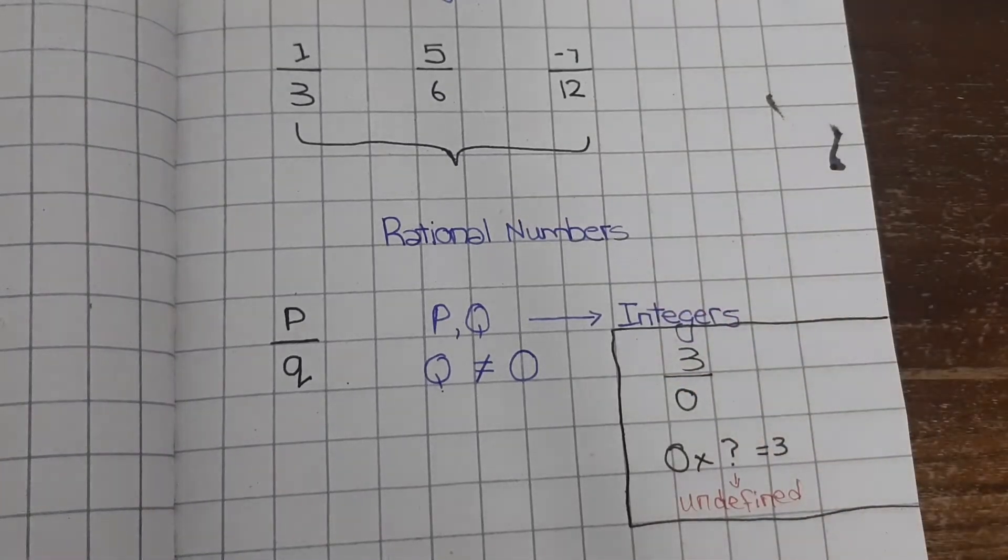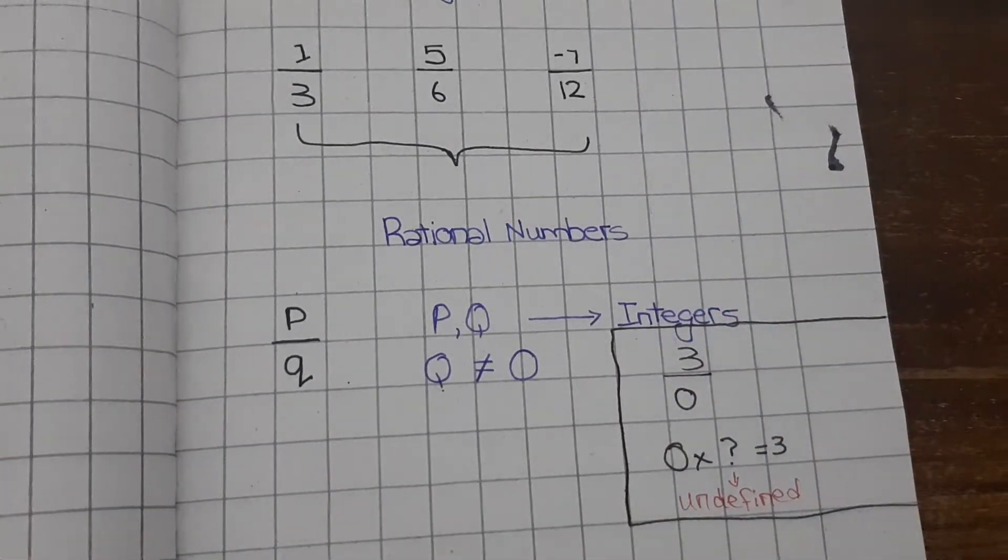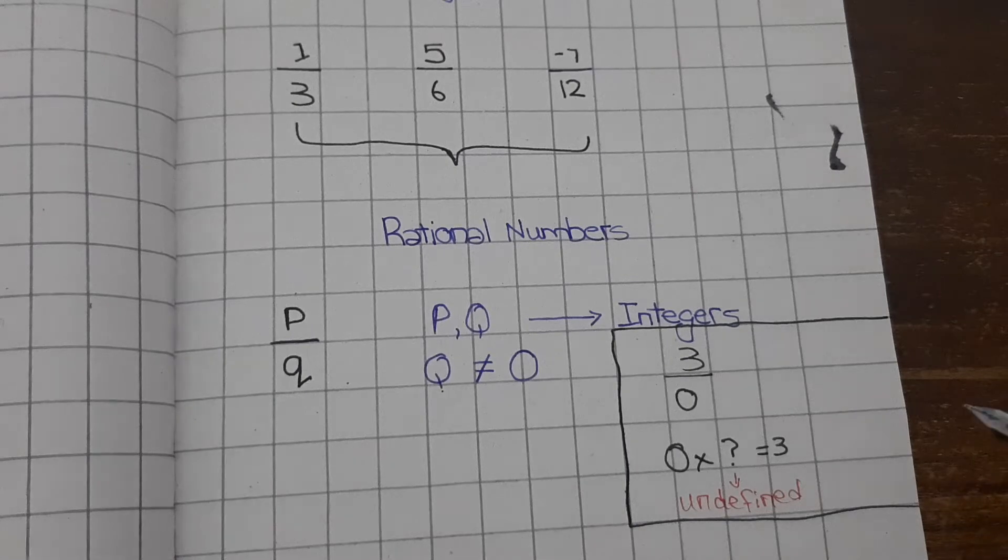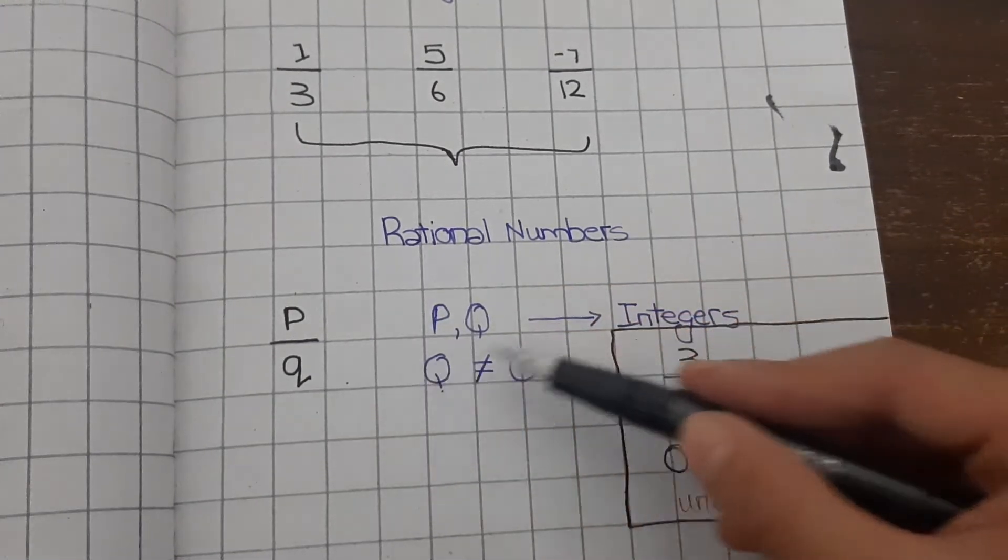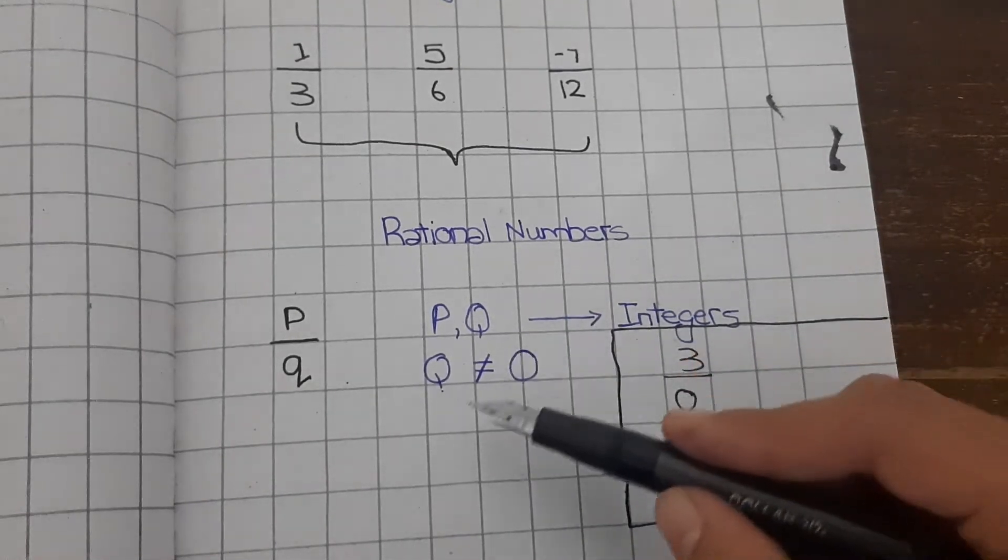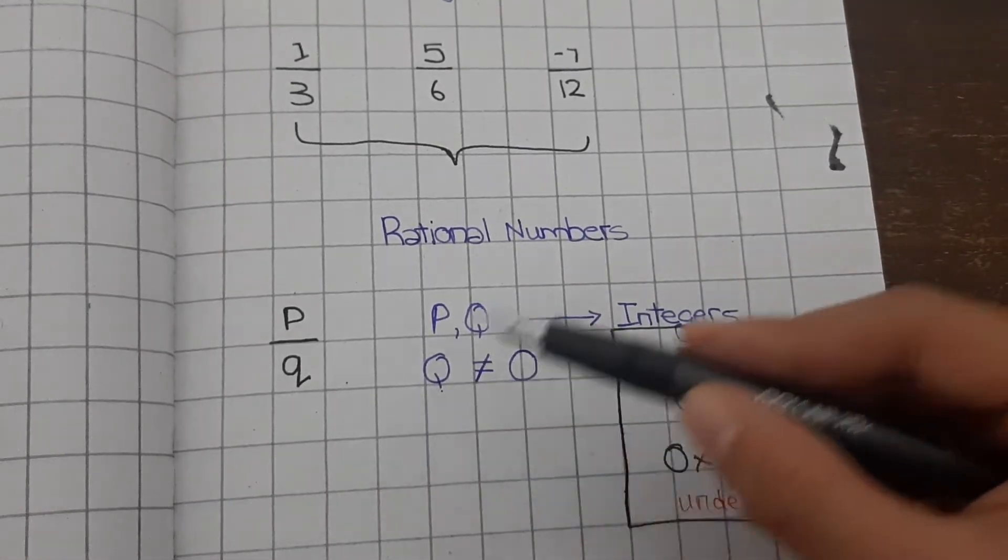In order to be a rational number, they need to accept two conditions. They are shown as P over Q. P and Q should be integers, and Q should not equal zero.